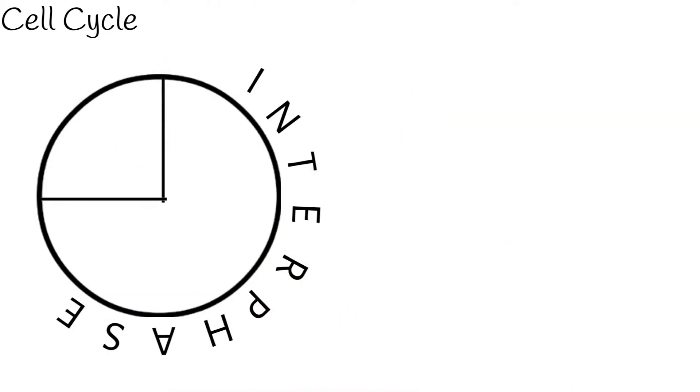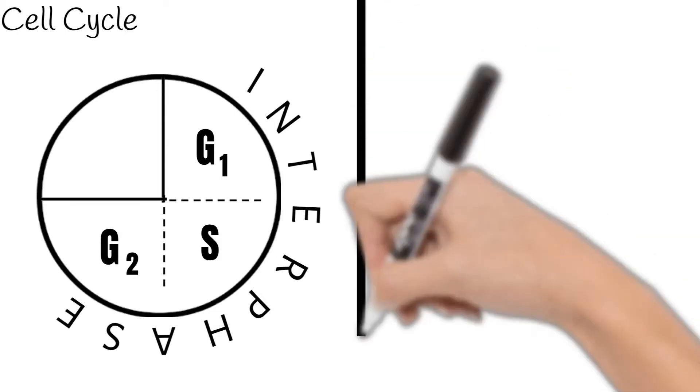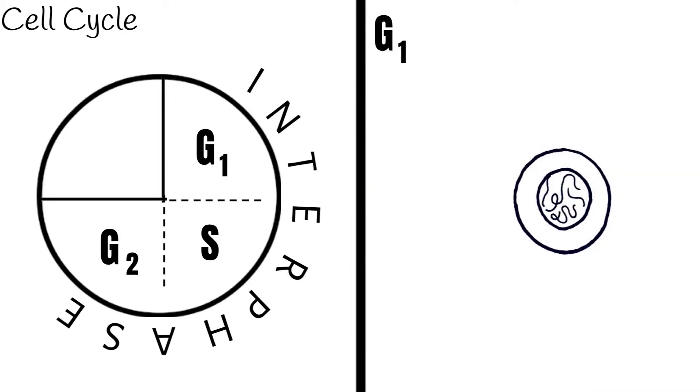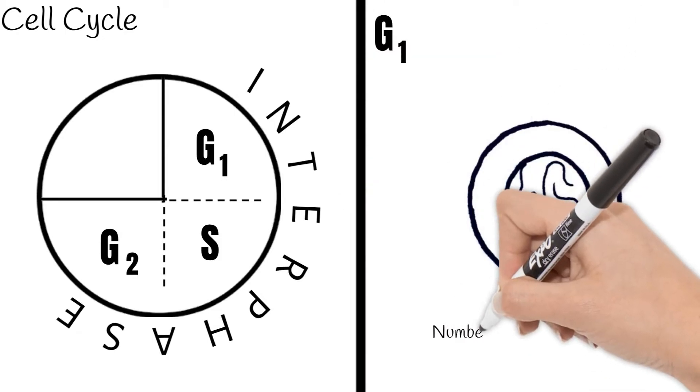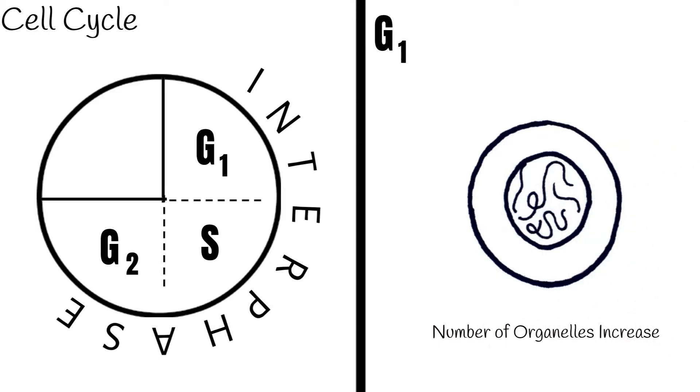Interphase is split into three sections: G1, S, and G2. During the G1 phase, the cell grows. The number of organelles increases, as does the volume of cytoplasm inside the cell.